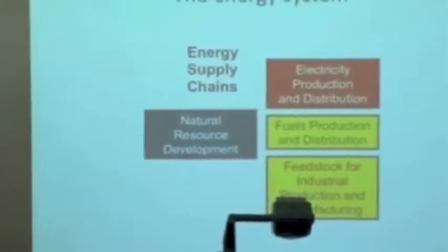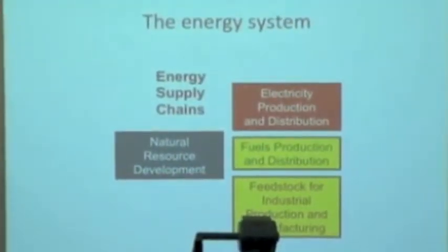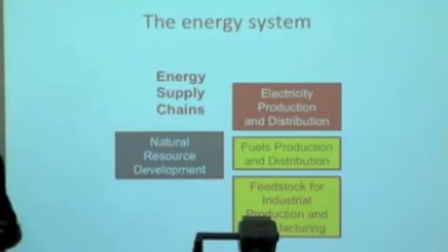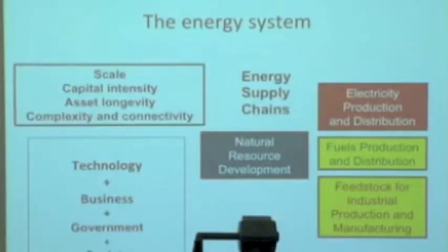Quick, a quick two-slider on the energy system, an easy way to think about it. There's really four major segments, supply chains involved in energy. There's natural resource development, of course, we've heard some about that, certainly on the mineral side, but in general, certainly oil, gas, coal, uranium, geothermal, all apply in here. Then, these typically feed three other major systems: electricity, fuel and distribution, and then, of course, feedstock for industrial purposes. And these supply chains have some linkages, and more as time is going on.